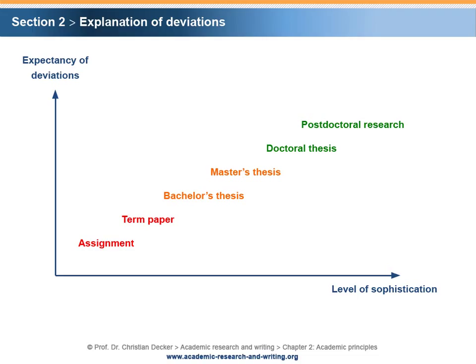The y-axis states the expectancy of deviations of an academic research project. The x-axis states the level of sophistication of an academic research project. Simplifying, one could say that the room for deviations increases from simple student assignments and term papers, to bachelor's thesis and master's thesis projects, to doctoral thesis and postdoctoral research projects.